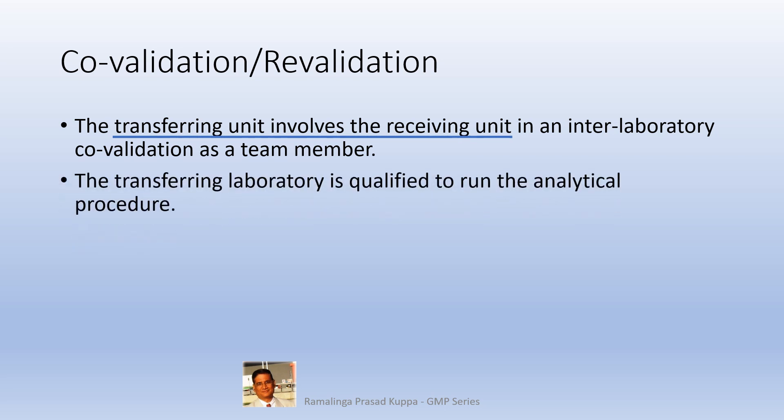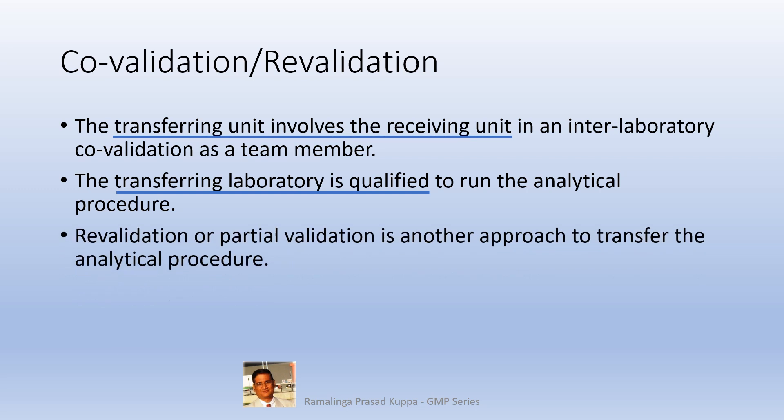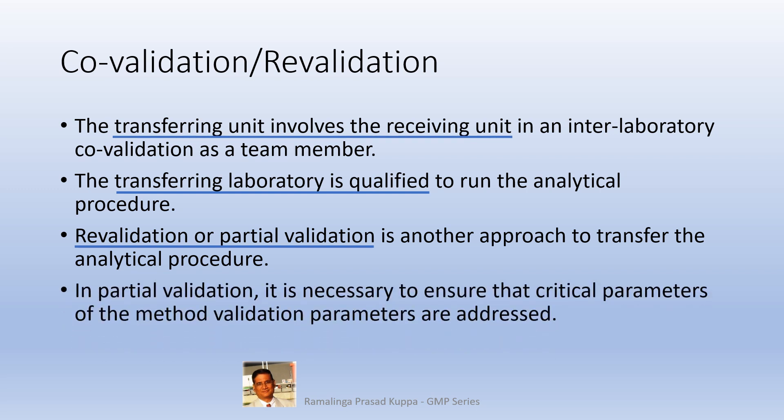The originating unit is authorized to run the test because it developed the test method. Revalidation or partial validation is another approach to transfer the analytical procedure — validating the method once again at the receiving end is also an acceptable approach. Partial validation may also be done depending upon the ease of executing the test method and criticality. In partial validation, it is necessary to ensure that the critical parameters of method validation are addressed, particularly those that may affect the transfer.